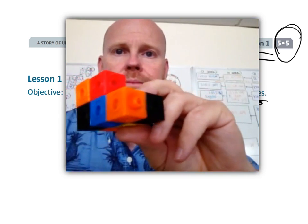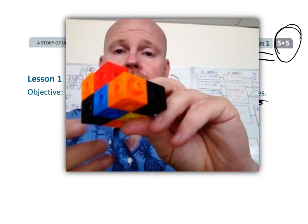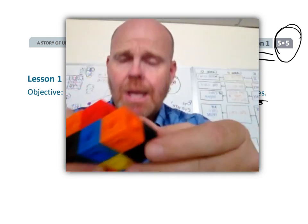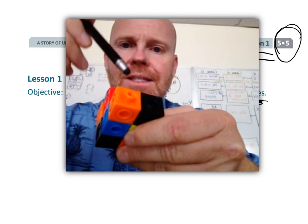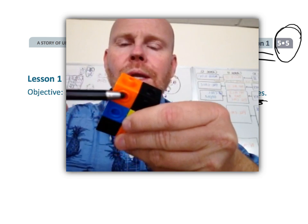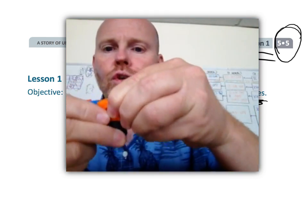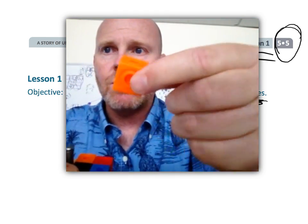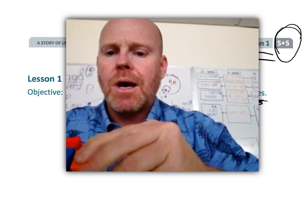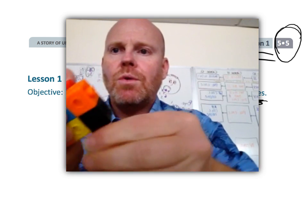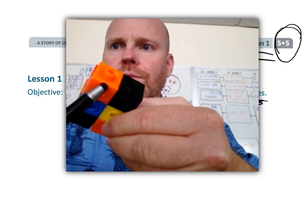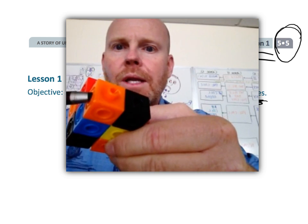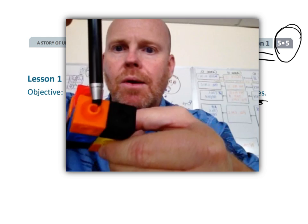Now the one thing we want to be careful with, if you're a parent or teacher, is that oftentimes students are going to count faces when really what we want them to be counting are cubes—the individual cubes. So this would count as one, but oftentimes students will see it and count it as three or four. They'll count one here, one here, one here, and then one on the top.